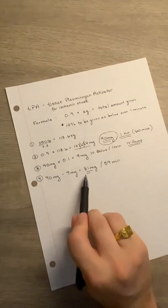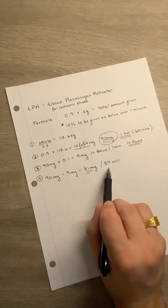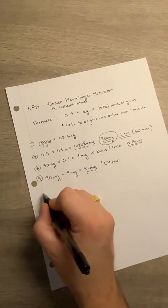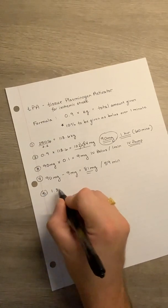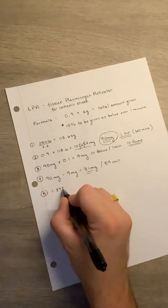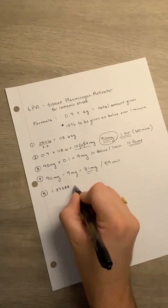So now we have 81 milligrams divided by 59 minutes. Once we do this math, it's going to equal a really long number. That's 1.37288, etc., and change.